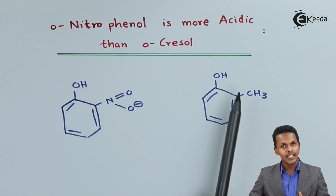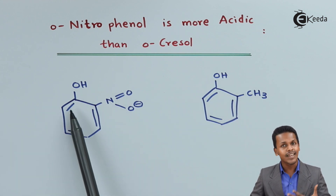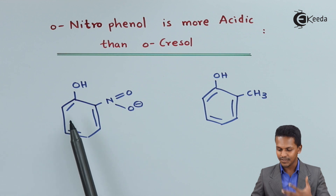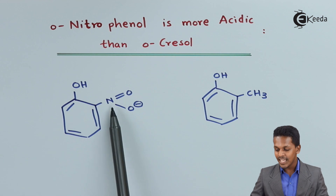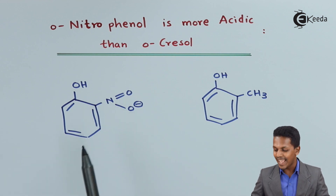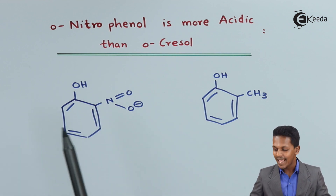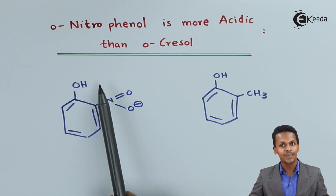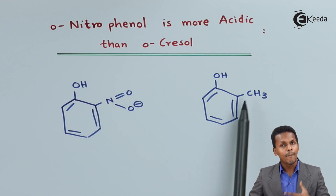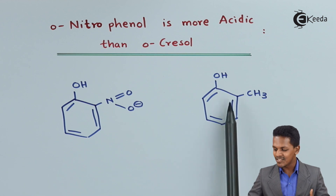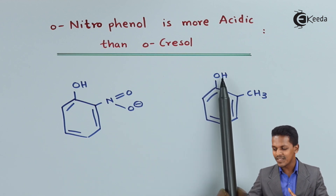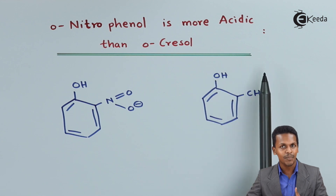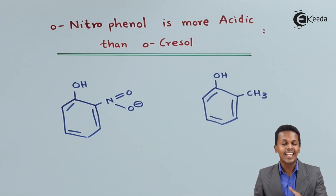Talking about resonance first — there are delocalized electrons in the benzene ring. The nitro group helps to delocalize the electrons, thereby facilitating removal of the hydrogen. In contrast, CH₃ provides electrons, so delocalization will not occur, meaning the hydrogen will not escape. The removal of hydrogen explains whether a compound is acidic or not.